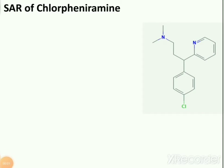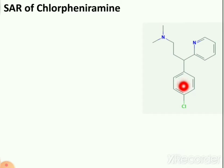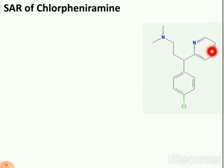Next is the Structure Activity Relationship of Chlorpheniramine, which is an H1 antihistaminic drug that fulfills all the structural requirements of H1 antihistaminic drugs. In this picture you can see the structure of Chlorpheniramine. It contains two Aryl substitutions: the 1st Aryl substitution is aromatic while the 2nd Aryl substitution is a heteroaryl substitution.